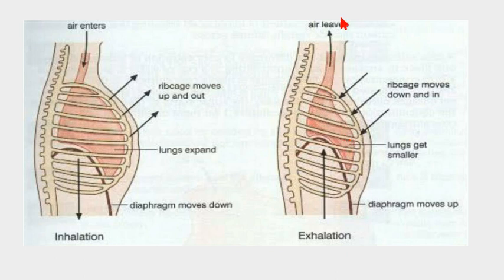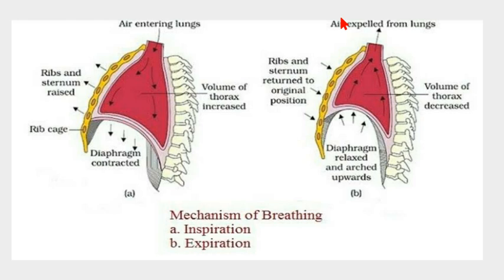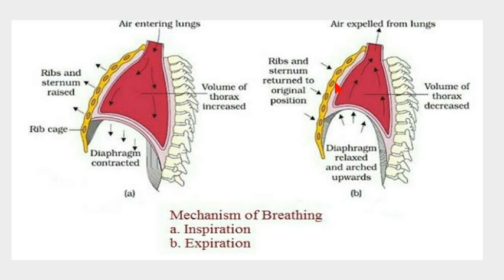This diagram also shows the mechanism of breathing — inspiration and expiration. The arrows indicate diaphragm contraction: when the diaphragm contracts, it flattens and moves downward; when it relaxes, it arches upward. Also, ribs and sternum are raised during inhalation and moved inward during exhalation. As a result, volume of the thorax increases during inhalation so pressure decreases, and during exhalation volume decreases so pressure increases.